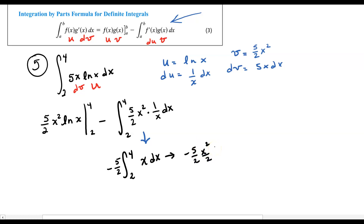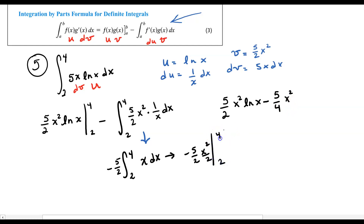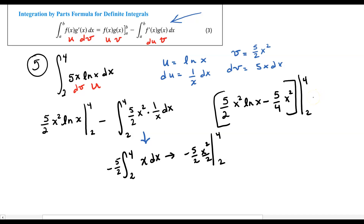When you put all of this stuff together, you have your (5/2)x² times the natural log of x, minus (5/4)x², and all of that is evaluated from 2 to 4. This is where you use your calculator — you plug in 4, you plug in 2, and you subtract those values. Rounded to the nearest hundredth, you get 33.52 for this definite integral.